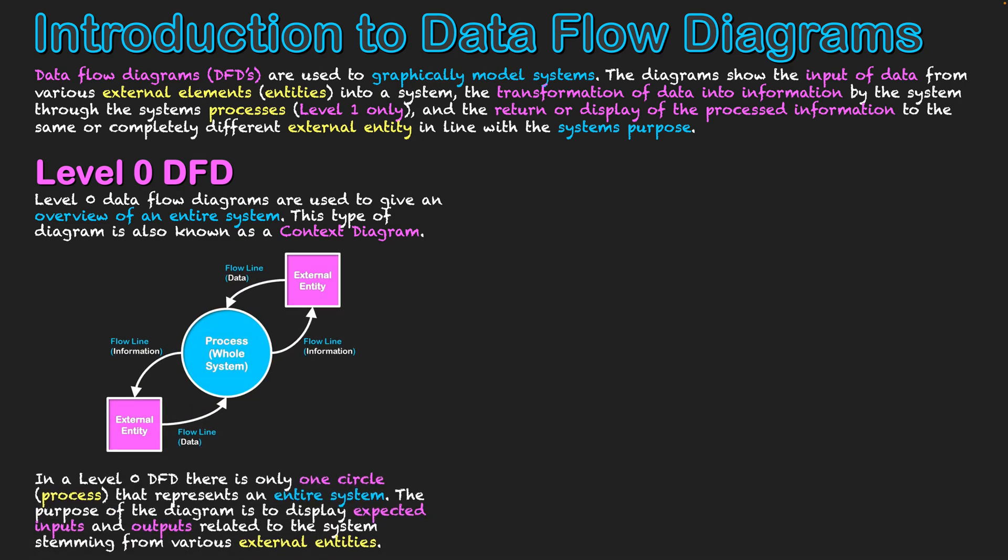With these diagrams, we often start off with a big circle in the middle of our diagram. This circle, and we only ever have one at a level 0, represents the entire system. It is a process that represents the whole system - whatever you want to name the system, followed by system traditionally.